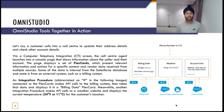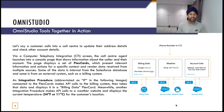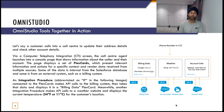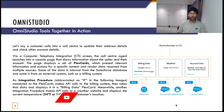Let's say a customer calls a call center to update their address and check account details. Via CTI, the call center agent launches into a console page showing information about the caller and their account. The page displays a set of FlexCards — billing data, weather, account info — all consolidated on one page. It's so much easier for call center users when everything is recognized via the caller's phone number.